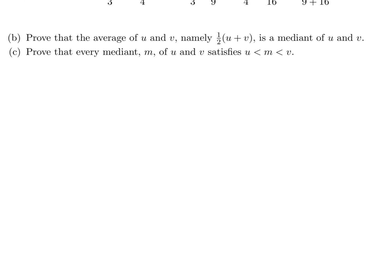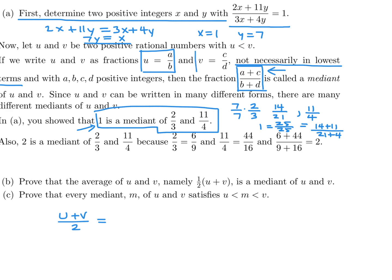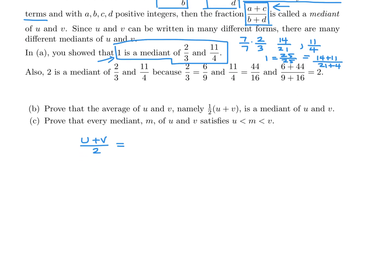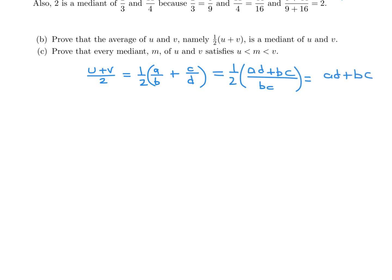Part B: prove that the average of U and V, namely (U + V) / 2, is a median of U and V. U is equal to A over B, and V is equal to C over D. So (U + V) / 2 is (A/B + C/D) / 2, which is one half times (A/B + C/D). Getting a common denominator, AD + BC over BD, and then combining: AD + BC over 2BD. This represents the average of U and V.